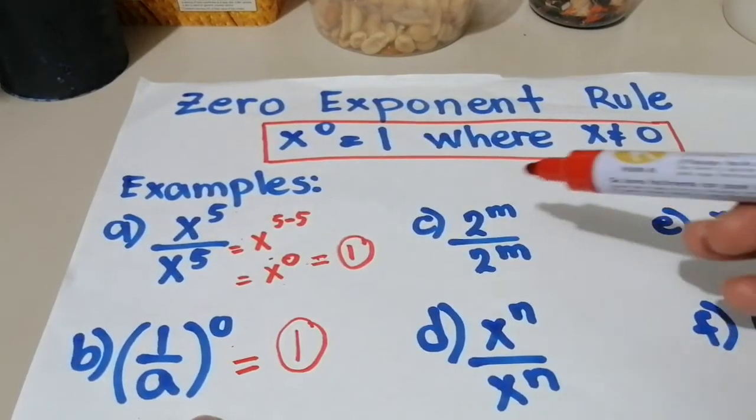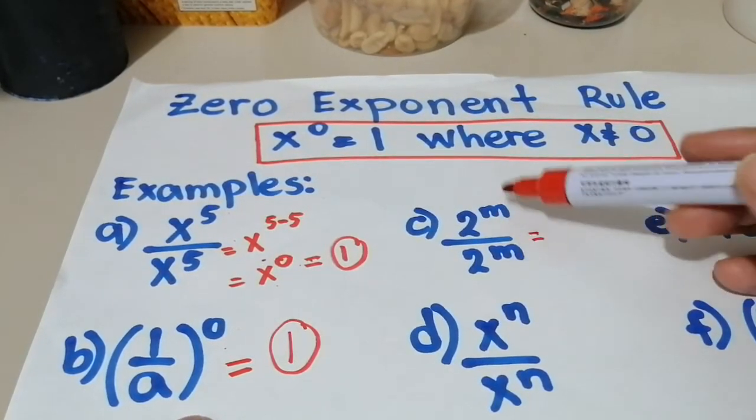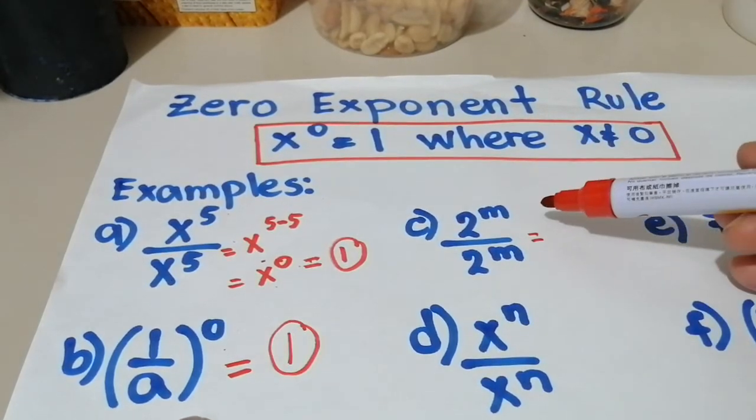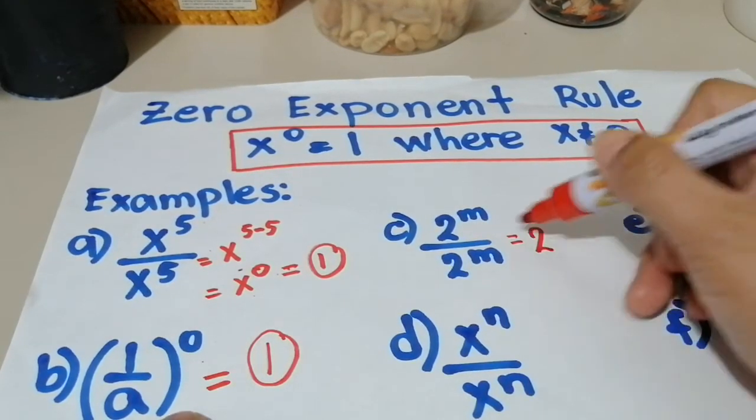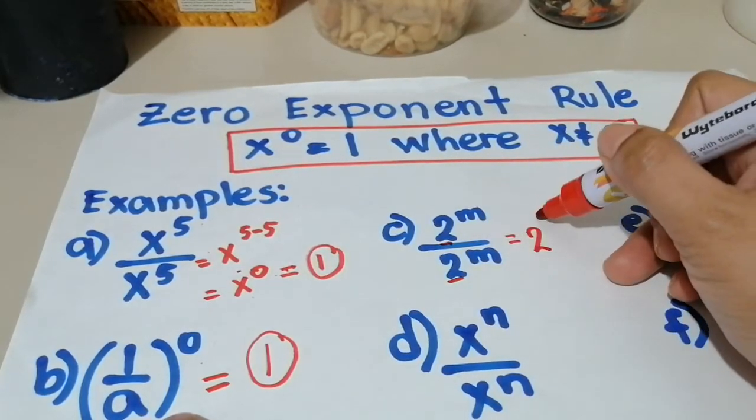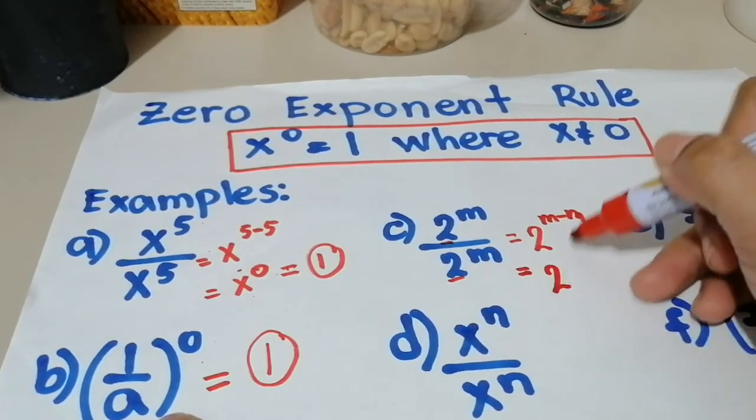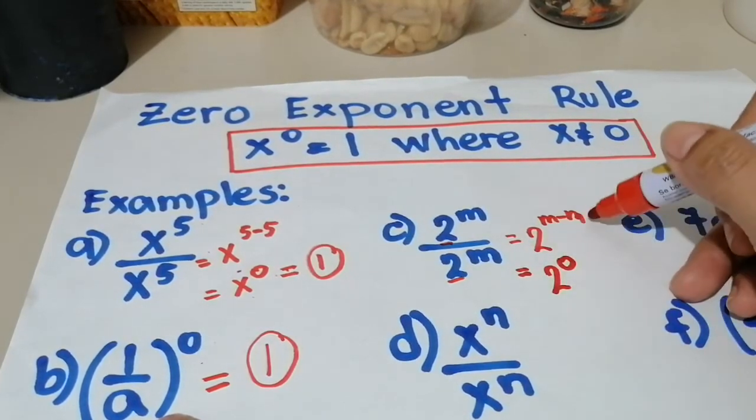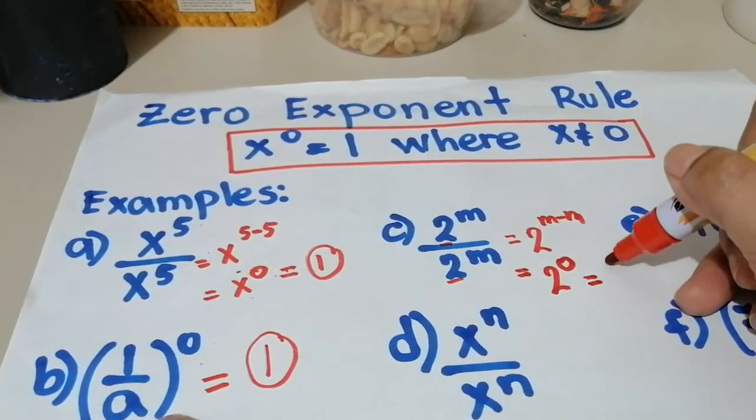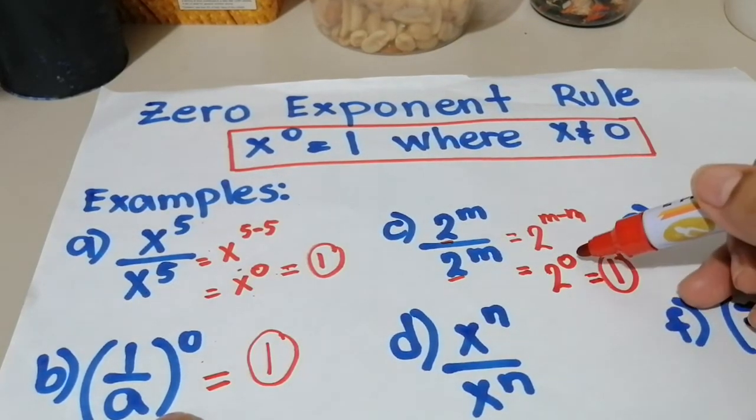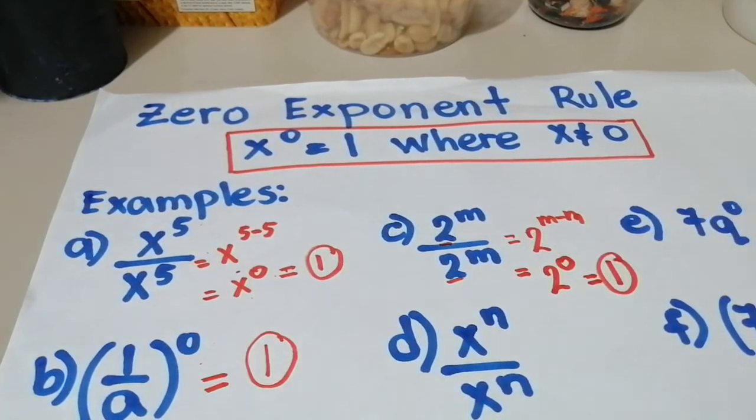Next, another is this one, 2m divided by 2m. So again, this is a division rule of exponent. Why division? Kasi nagdi-divide tayo. So the rule there is, copy the bases, 2 ang base niya, and then subtract the exponent. So m minus m. So doing that, m minus m is equal to 0. And since 2 raised to 0 power here, the final answer will again be equal to 1. Kasi yung exponent niya, after we simplify this quotient rule of exponent is 0, kaya 1 pa rin siya.